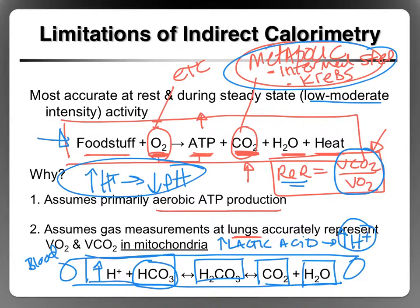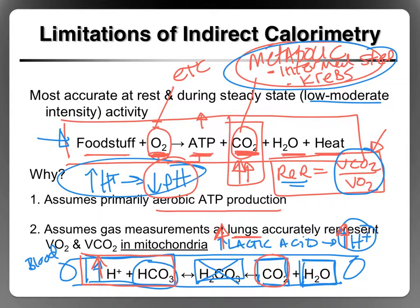Carbonic acid is an unstable molecule, so it immediately dissociates into CO2 and water. Basically, the more lactic acid we produce, the more hydrogen ions accumulate, the more buffering occurs trying to fight the drop in pH. In the process of buffering these hydrogen ions, we produce CO2. So CO2 production starts to rise — not because we're making more CO2 from the intermediate step or from Krebs, but because we're making it in the blood through buffering.